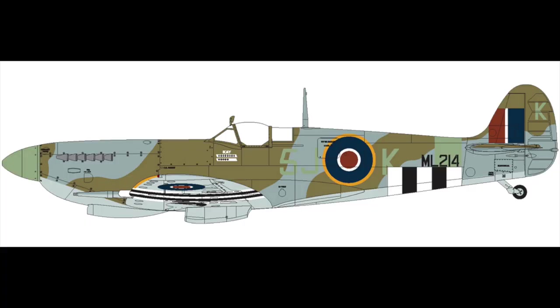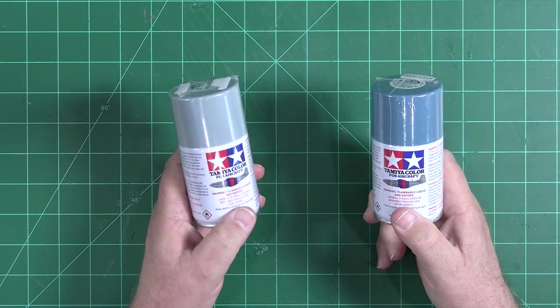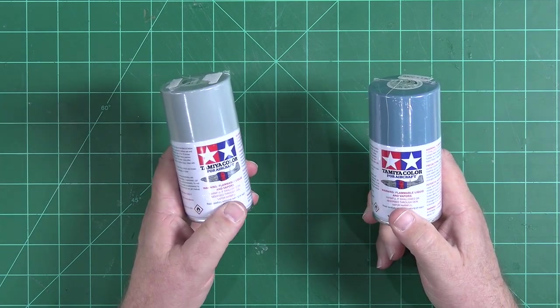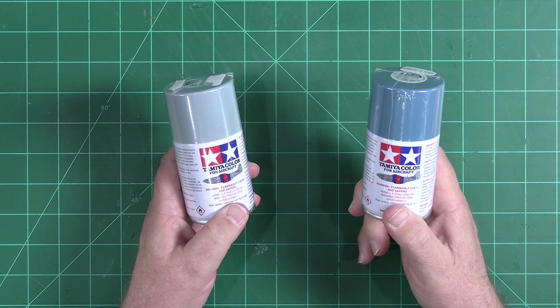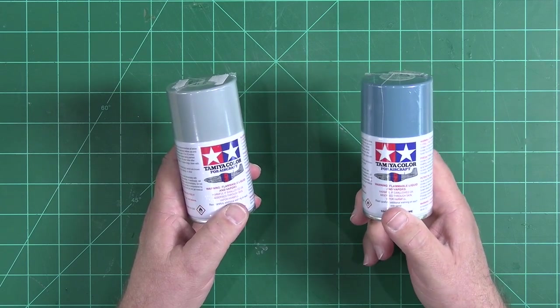Looking at this image of the Spitfire we're emulating, the underside is a light to medium gray, while the gray in the upper camouflage pattern definitely has a blue vibe going on. Here are the lacquers I've chosen. For the underside, we're going to go with this light ghost gray. The top surface will eventually get this intermediate blue, which seems just about perfect.